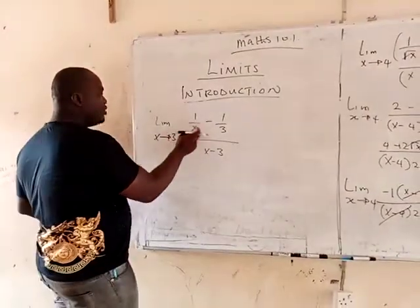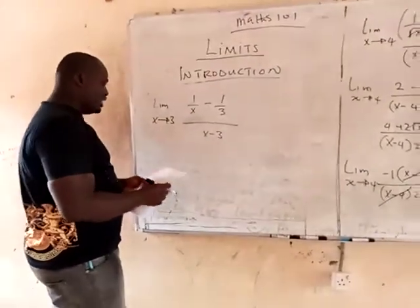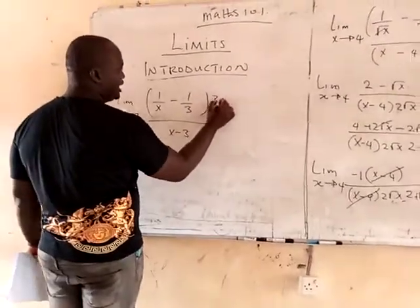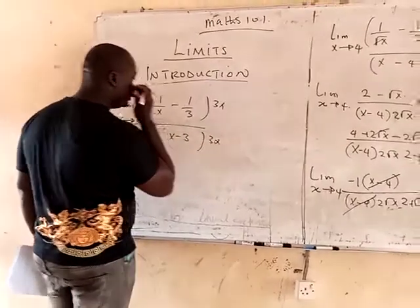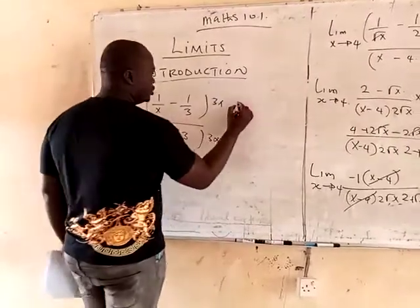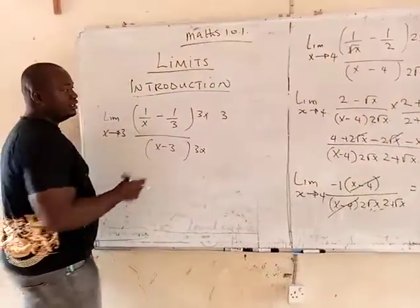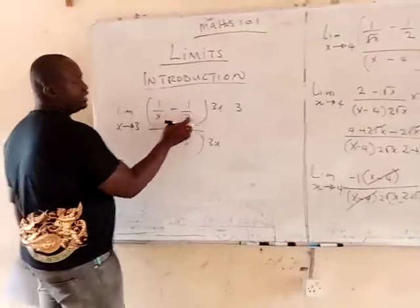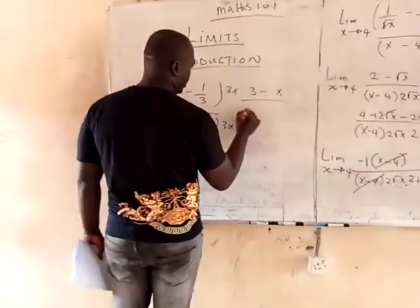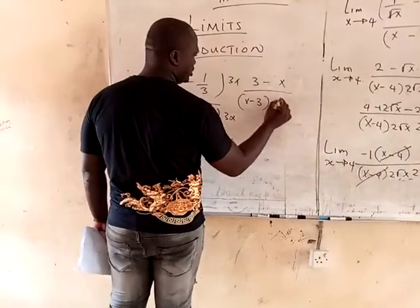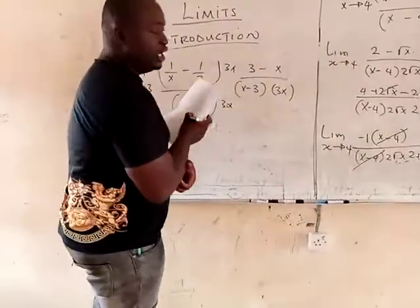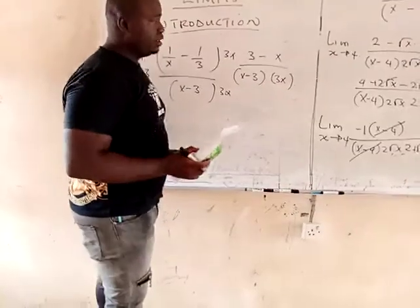Here you have s and you have 3. So the LCM of this is 3s. Times the top by 3s, and times the bottom by 3s. When 3s comes into this place, s will cancel s, so you are going to get 3. If 3 comes into this place, 3 will cancel 3, so you get s. So all over s minus 3, and then what? You have 3s. Like I said, always leave the denominator — do not go and expand it.